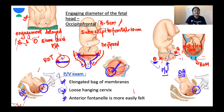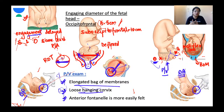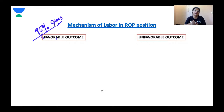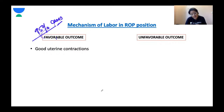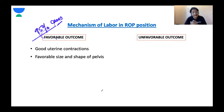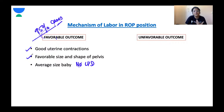The second unfavourable outcome occurs with moderate deflection. The occiput and synciput can strike the pelvic floor together because the head is deflected. Neither the occiput nor the synciput rotates anywhere — labour is stuck. The head stays as ROP. This is called non-rotation of the head or oblique posterior arrest.